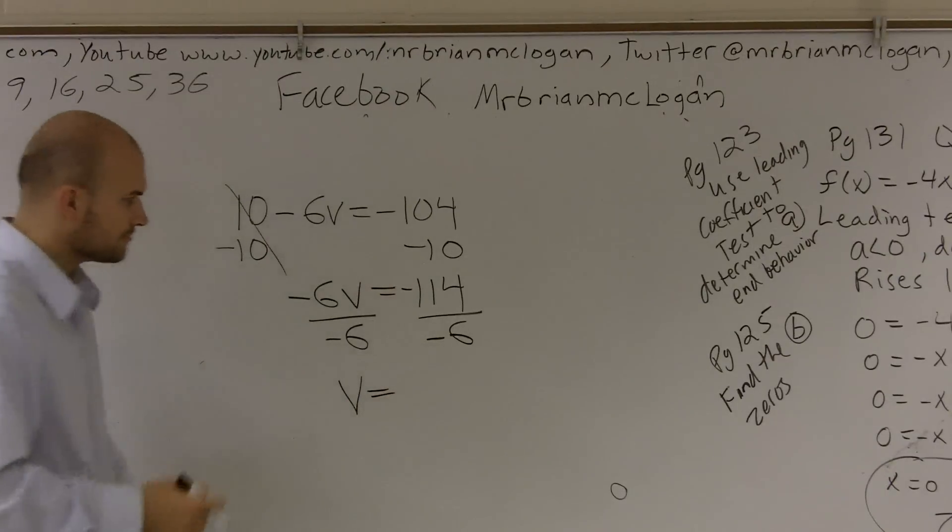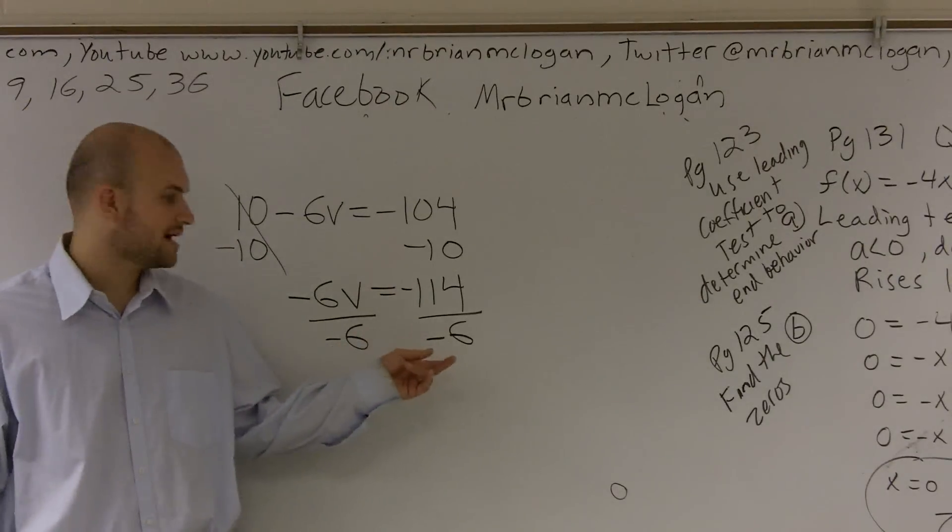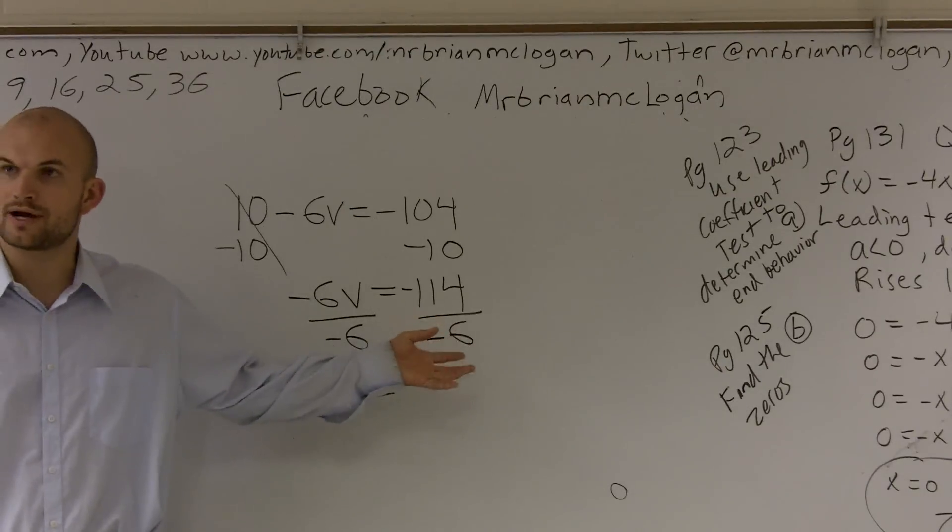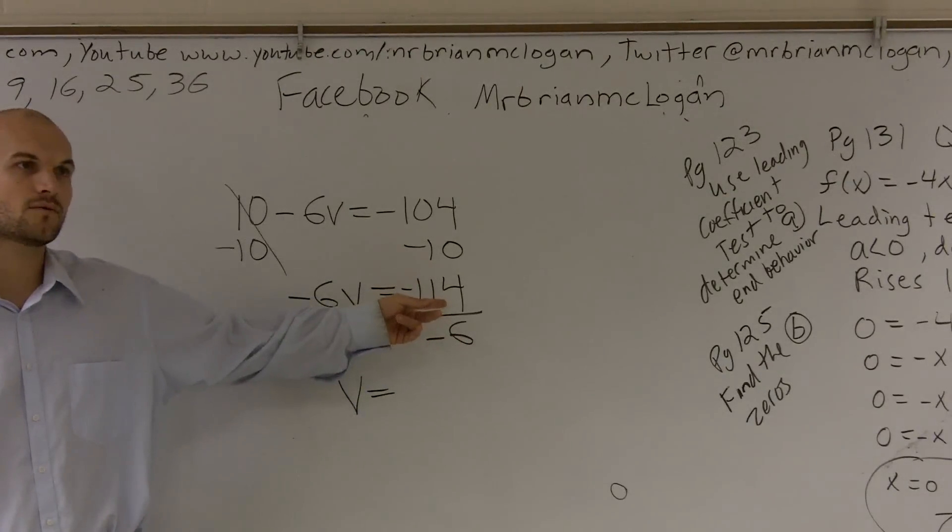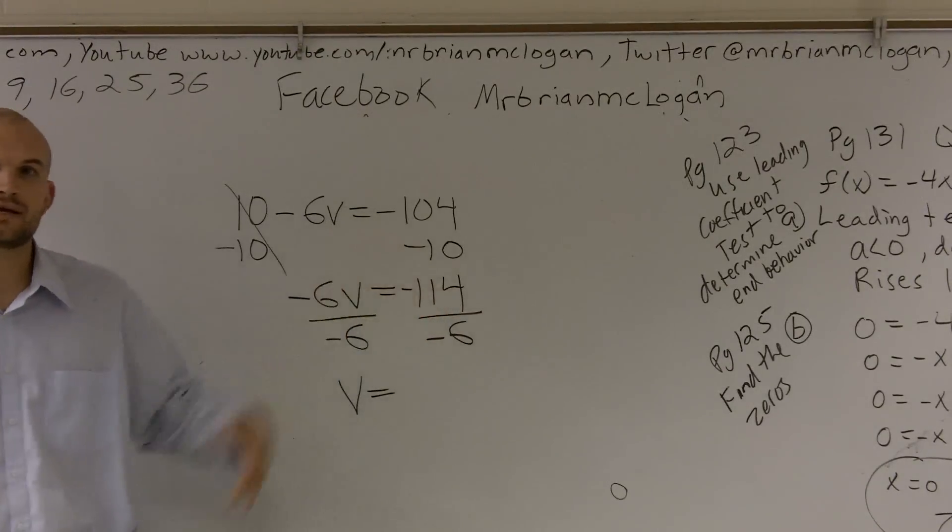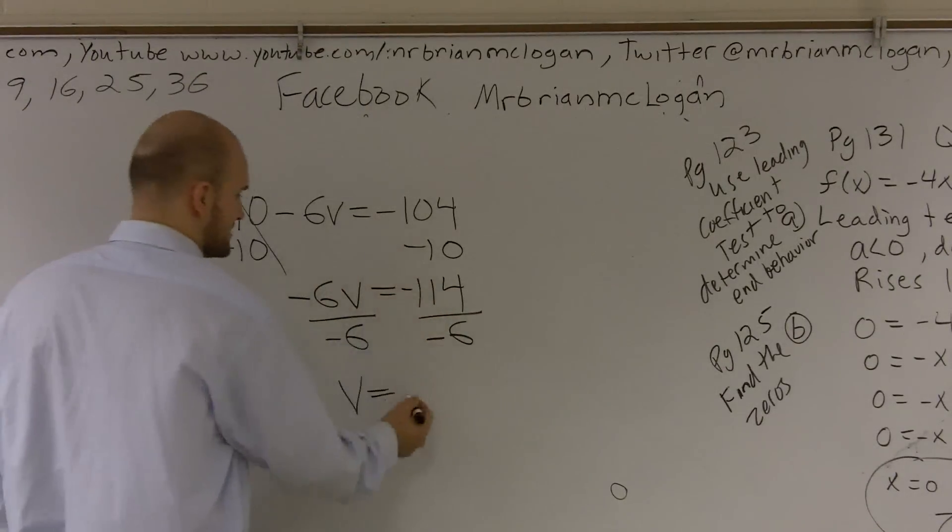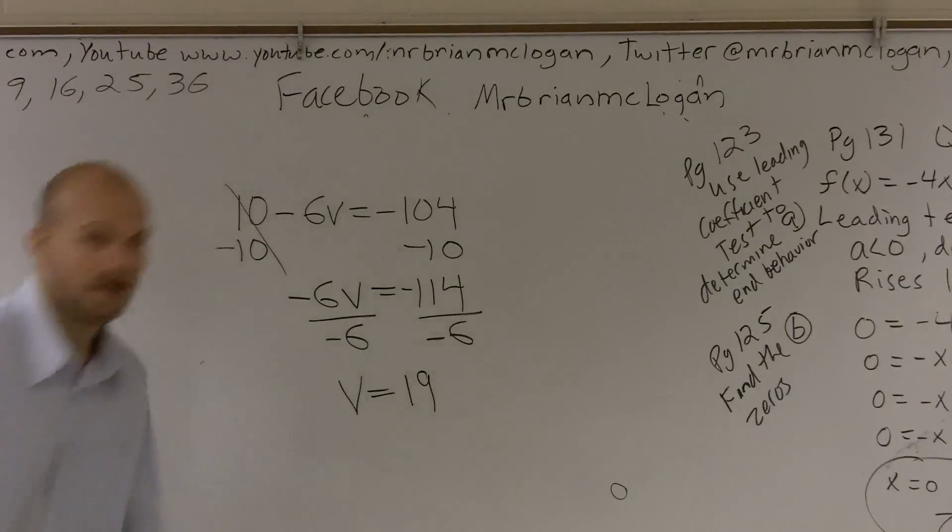V equals, well, I know that 6 times 20 would give me 120, right? And if I minus 6, I get 114. So therefore, it would be 19. And negatives cancel out, so I get a positive 19. All right, that's it.